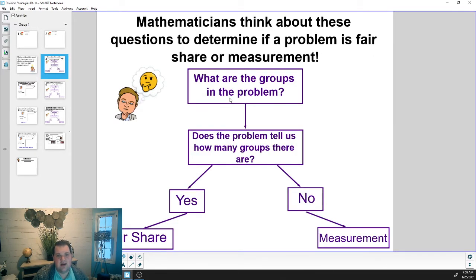We looked at this chart and said that mathematicians think about these questions to determine if a problem is fair share or measurement. The first question we ask is what are the groups in the problem? Once we figured that out, we ask does the problem tell us how many groups there are? If yes, it's fair share. If no, it's measurement.